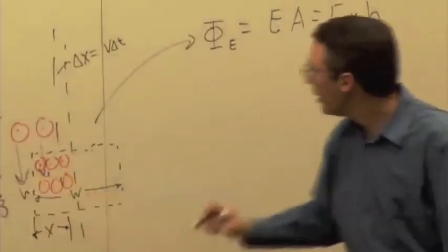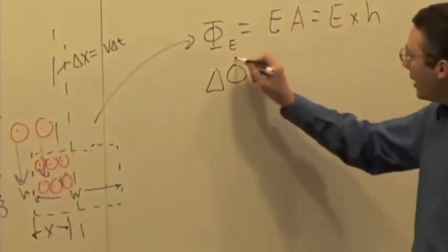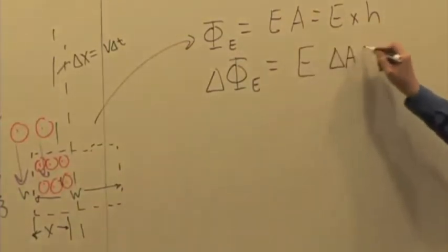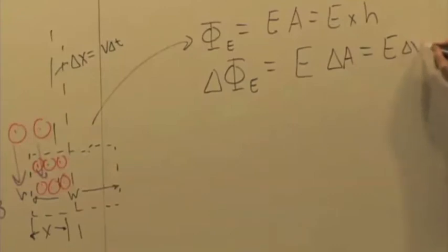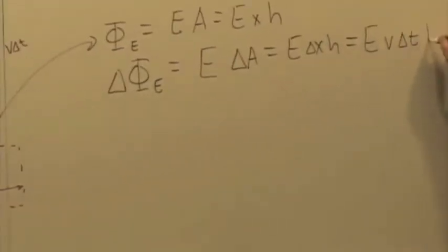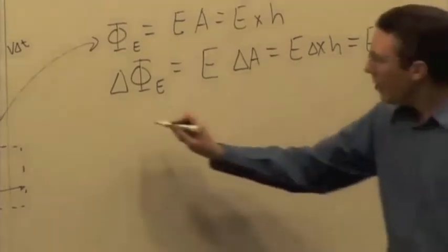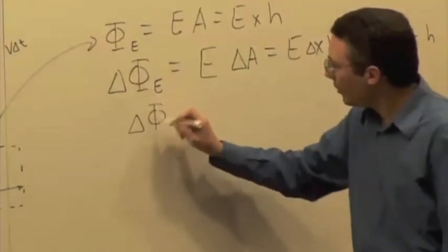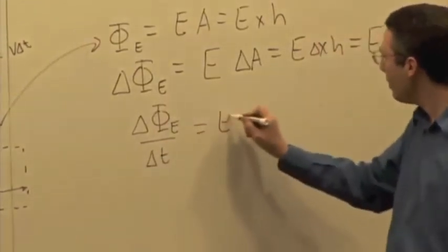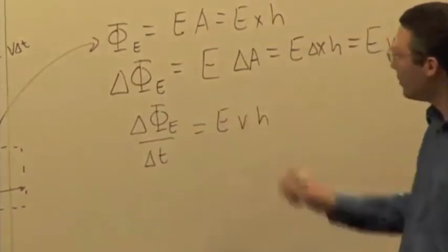My delta phi is going to be E times that change in area, or E times delta X times H, which is E times V delta T times H. The change in electric flux per unit time, I just divide out that time, and I get E times V times H.